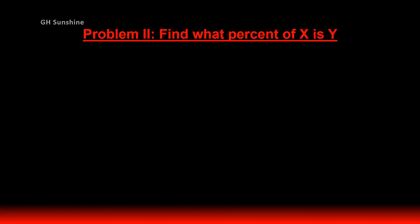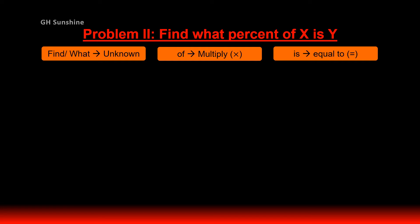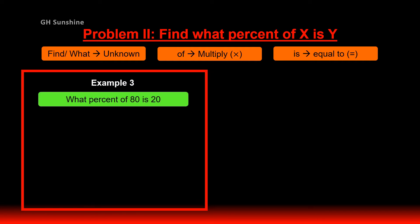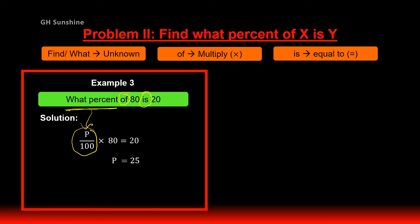We proceed to the second problem of percentage: find what percent of X is Y. Don't forget the three guidelines. Example 3 — what percent of 80 is 20? 'Of' means multiplication, 'is' means equal to. 'What percent' means we need to calculate the percentage value. So P over 100 times 80 equals 20. Solving this gives P equals 25.